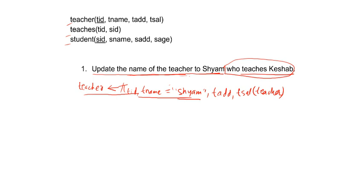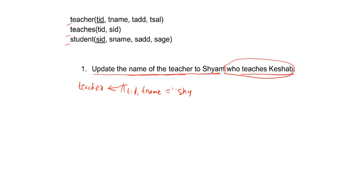That simple query is not very practical but useful for understanding. Now, before coming to the original condition — which involves other tables — let me give another intermediate example. Suppose the question was: update name of the teacher to Sam who are from Pokhara. In this case, the address attribute is present in the teacher table itself. So we would use pi with T ID.